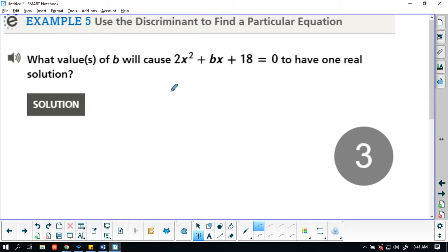So we're going to look when b squared minus 4ac is equal to 0, because when it is equal to 0, we have one real solution. My a in this case is going to be 2. My b in this case is b, because we don't know what b is quite yet. That's what we're trying to find. And my c is 18.